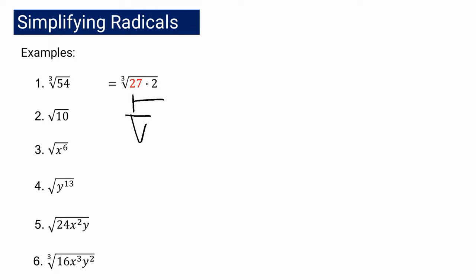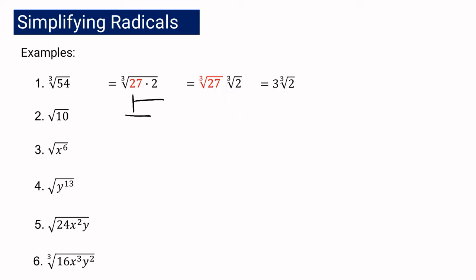Following law of radicals number two, we can write it as the cube root of 27 multiplied by the cube root of 2. Then we simplify the cube root of 27, so it can be written as 3 times the cube root of 2. So the simplest form of the cube root of 54 is 3 cube root of 2.